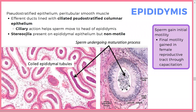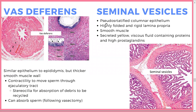Stereocilia are present in the epididymis but are non-motile. Final motility is gained in the female reproductive tract. The epididymis is visually very distinctive — once you learn to recognize it, you can't mistake it. The vas deferens has pseudostratified columnar epithelium, highly folded rigid lamina propria, and a lot of smooth muscle. It secretes a yellow fluid high in proteins and prostaglandins to help move sperm through the ejaculatory tract.